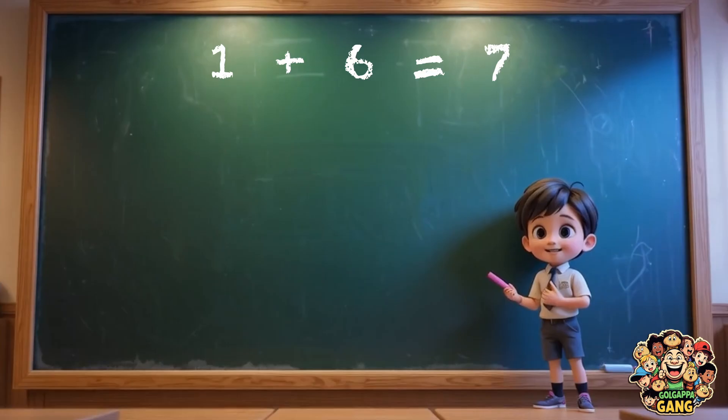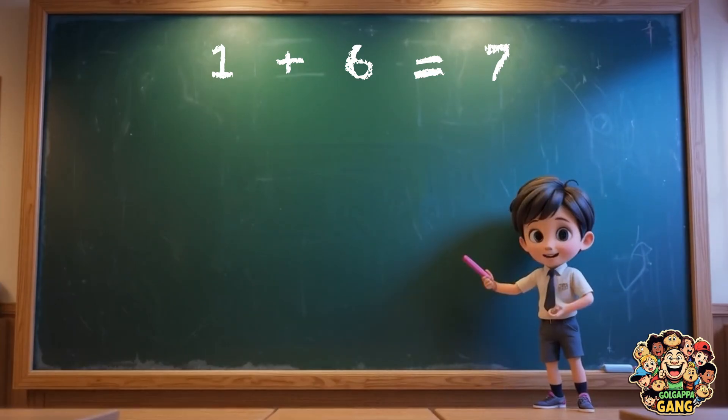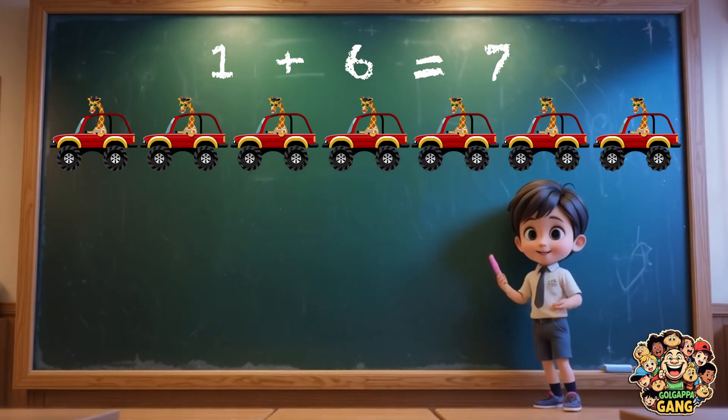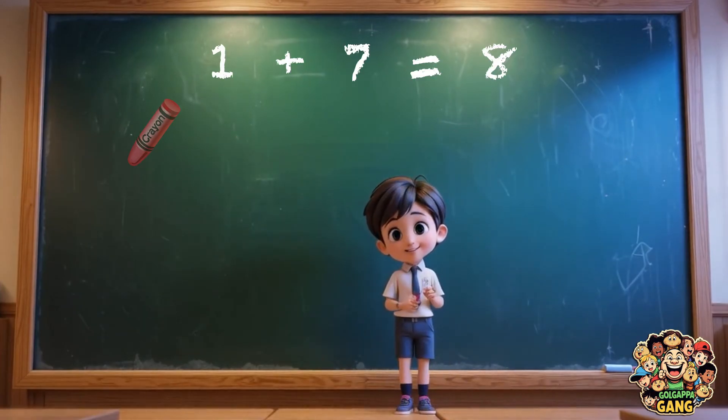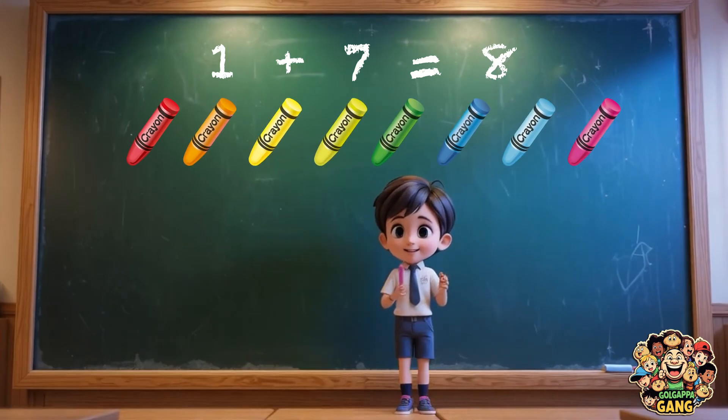One plus six equals seven. Like, one toy car plus six toy cars equals seven toy cars. One plus seven equals eight. Like, one crayon plus seven crayons equals eight crayons.